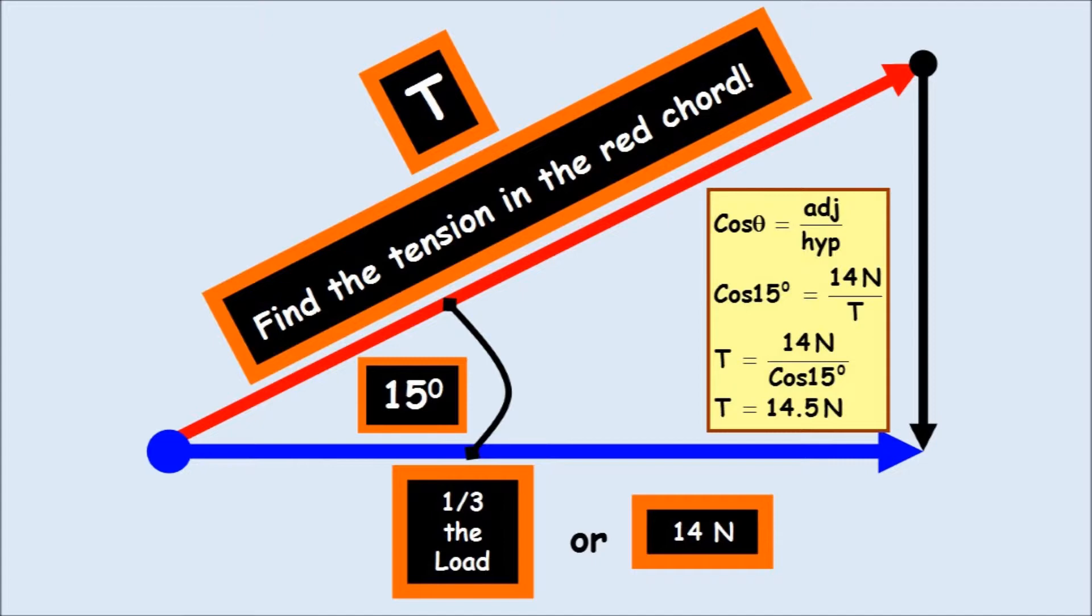Notice I have three lines, three chords holding up the flower pot. So it's going to be 42 divided by three. If I had five chords, I would divide it by five. And you would act accordingly relative to the calculation.